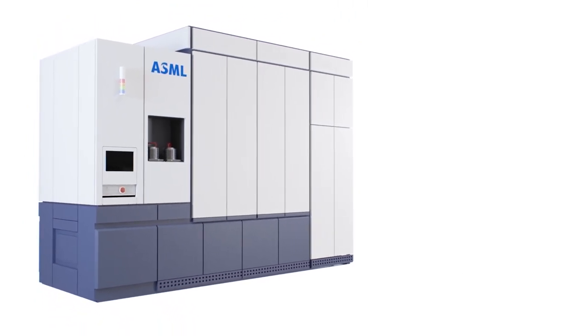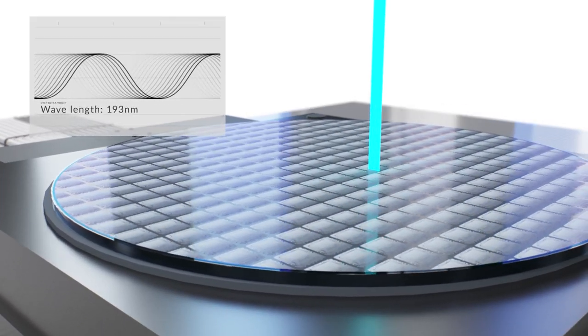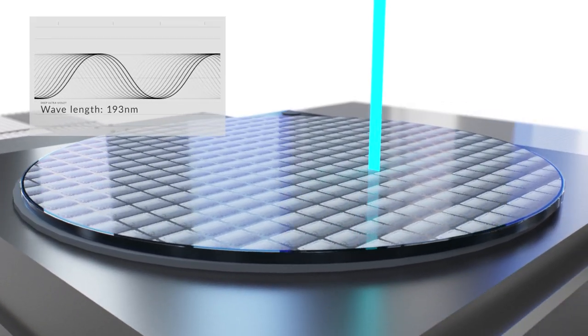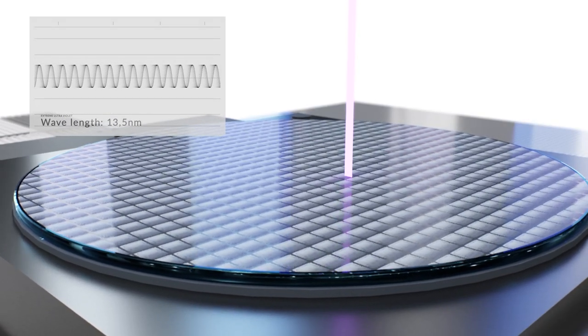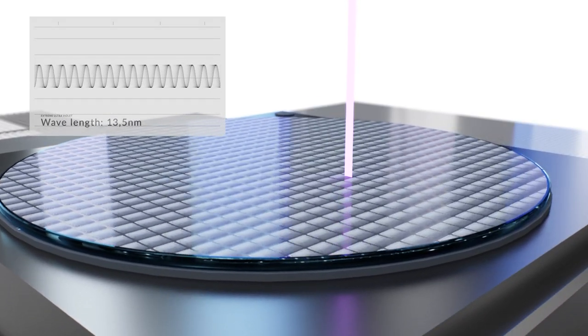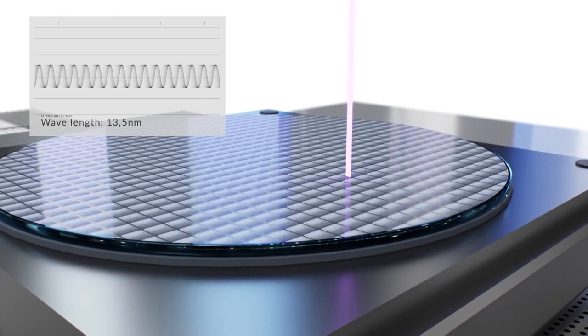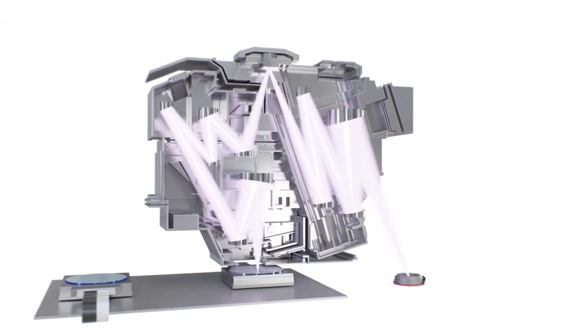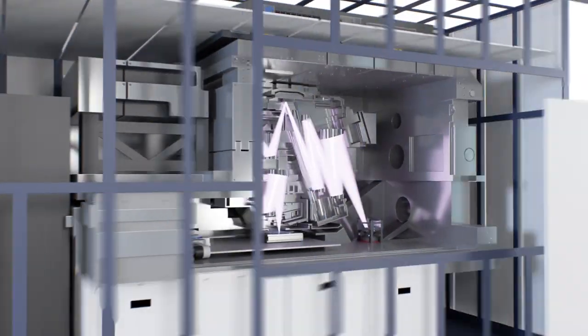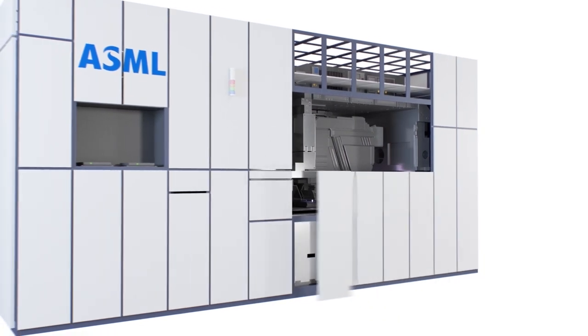Aktuelle Lithographie-Systeme nutzen Licht mit einer Wellenlänge von 193 Nanometer. Extrem ultraviolettes Licht hat eine 15 mal geringere Wellenlänge und ermöglicht dadurch noch kleinere Chipstrukturen. Diesen Technologiesprung realisieren wir durch EUV-Optiken, die aus Spiegeln anstelle von Linsen bestehen.